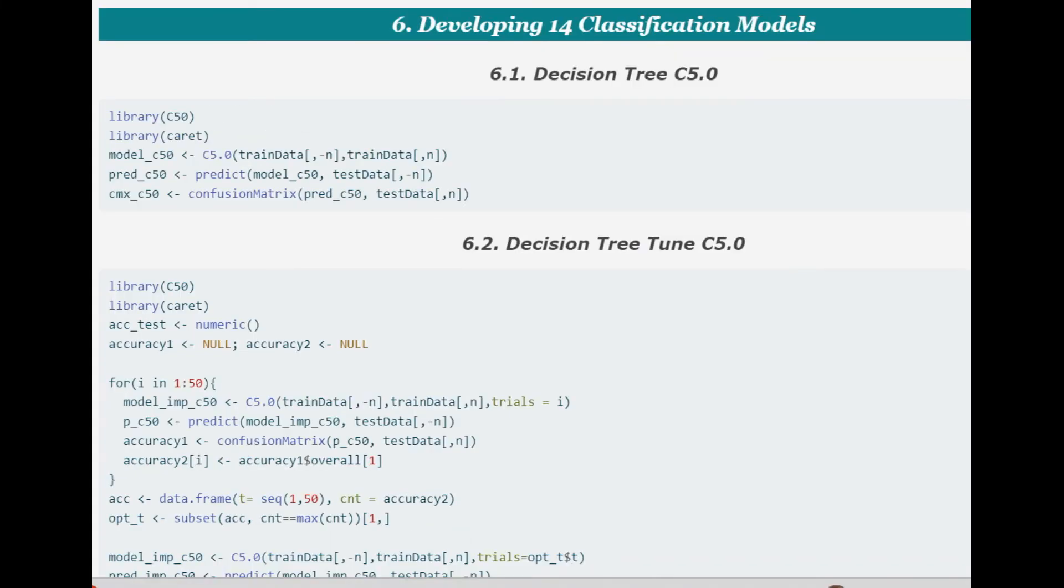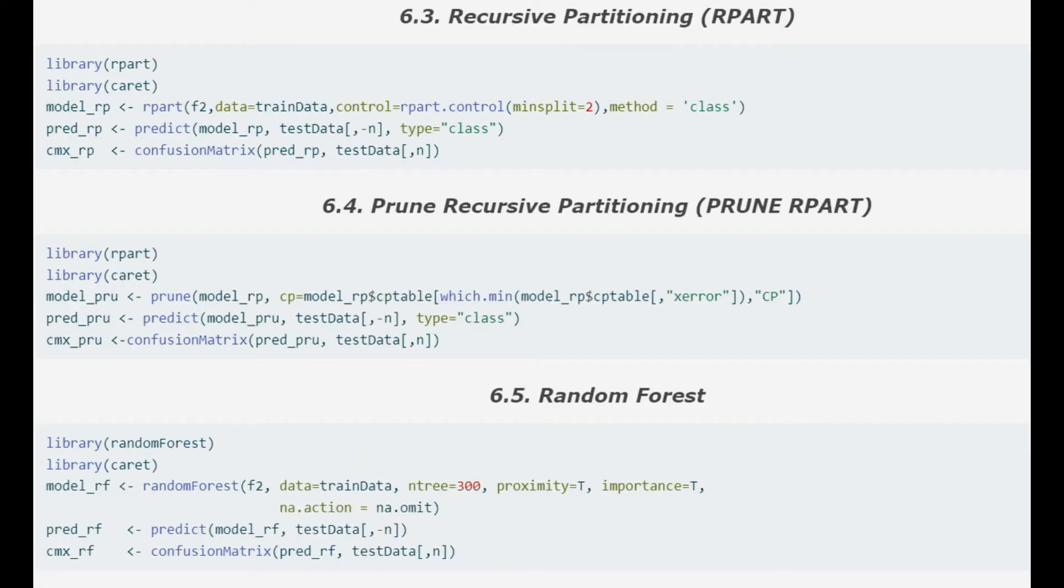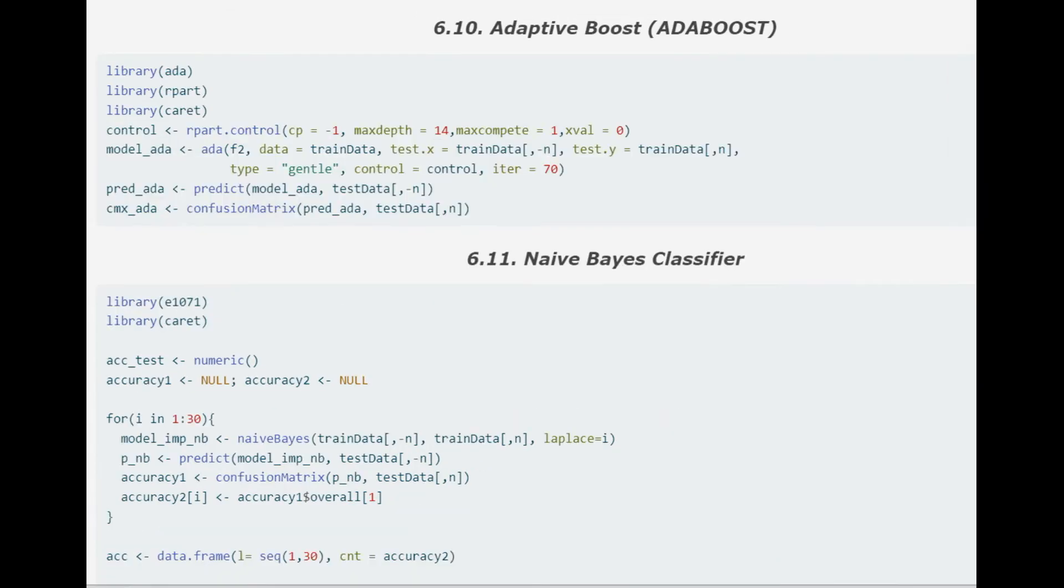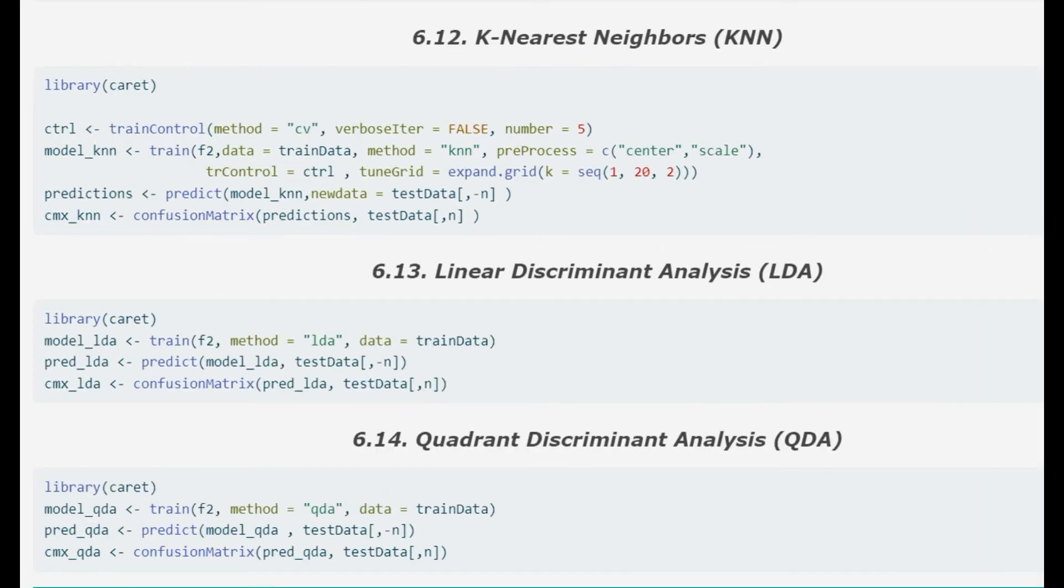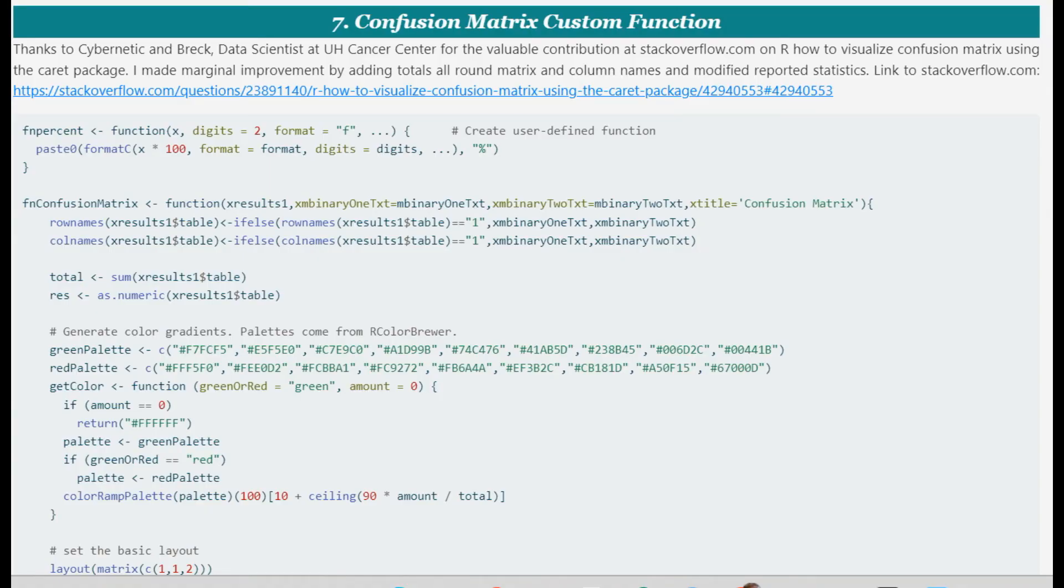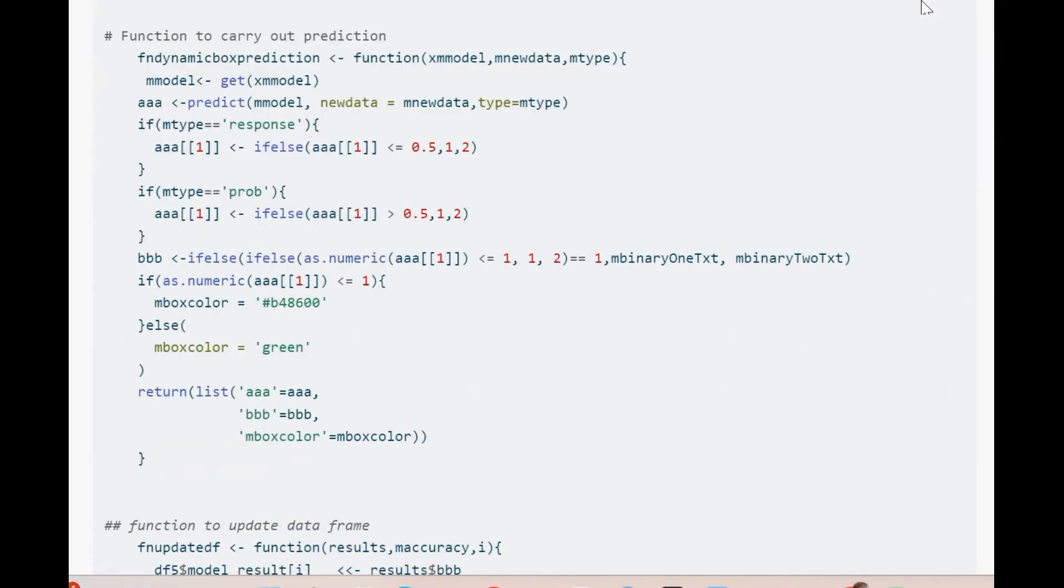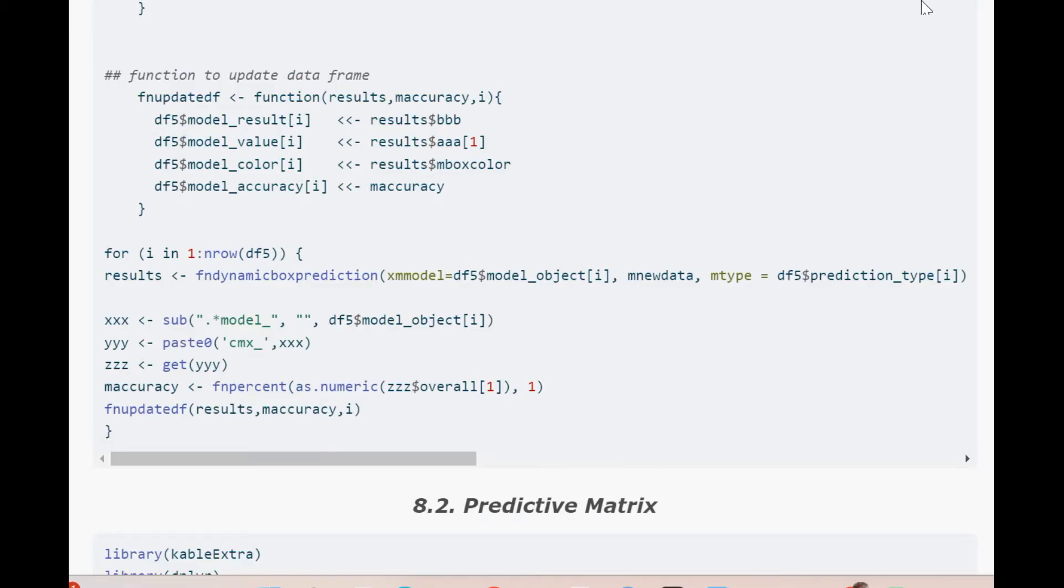Multiple 2 by 2 confusion matrix with statistics is built using a custom function. Thanks to stackoverflow.com. I have added a few functionalities to that. We are building here a data frame with all required values and run the custom function to generate such beautiful and informative confusion matrices.